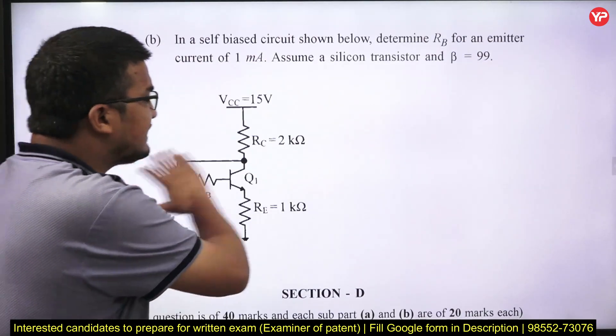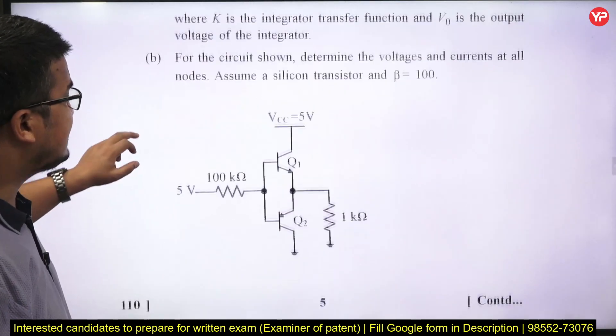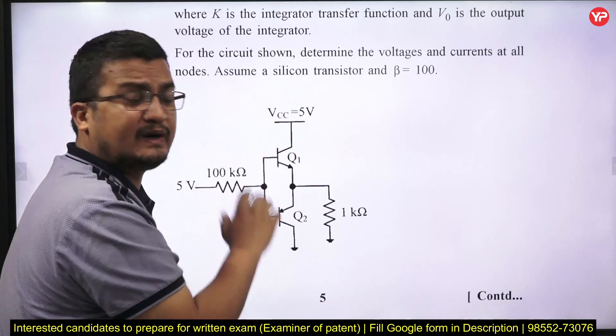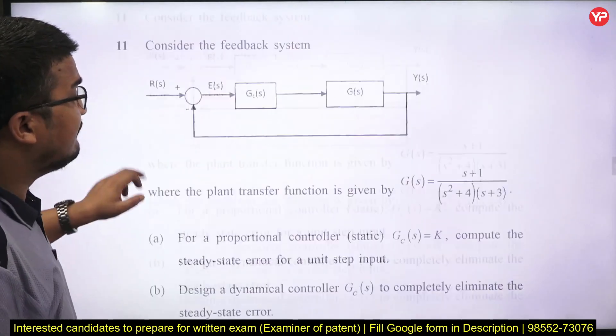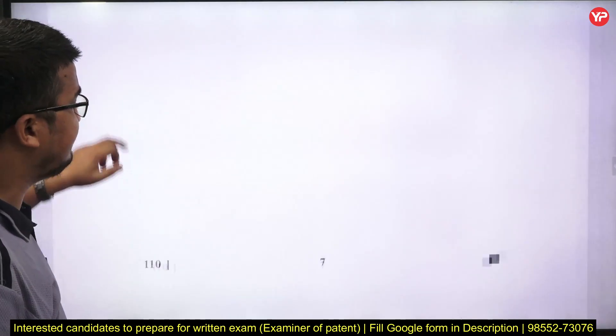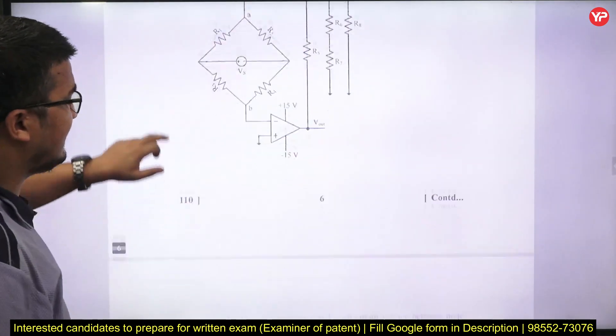Then coming down, again this question is directly from the microelectronics Sedra and Smith textbook question. Again coming down, this question is again from the Sedra and Smith text question microelectronics. So guys there are so many questions which are straight away taken from the text book. So guys the question level is not that much difficult. The question level is very basic. As I told you, you can see this is again network question.